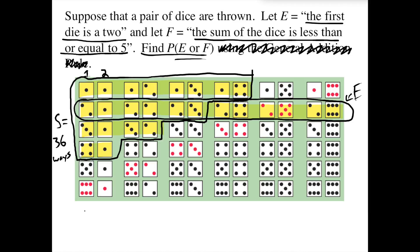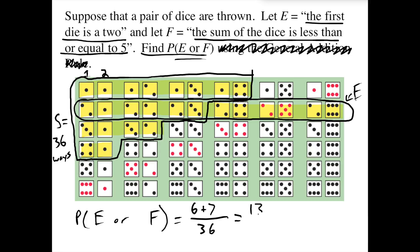There are seven ways F can happen that aren't already included in E. So the probability of E or F is the six ways E can happen plus the seven ways F can happen that aren't already counted, divided by the total of 36 outcomes, giving us 13 over 36. Since this is classical probability, we're just counting.